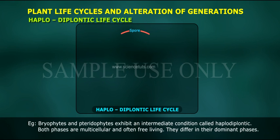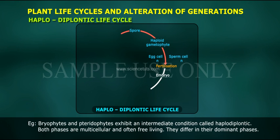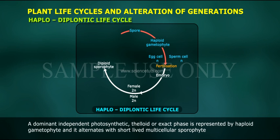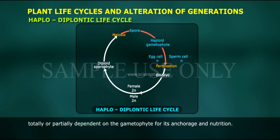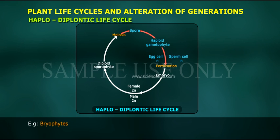3. Haplodiplontic Life Cycle: Bryophytes and pteridophytes exhibit an intermediate condition called the haplodiplontic life cycle. Both phases are multicellular and often free-living, but they differ in their dominant phases. In bryophytes, a dominant, independent, photosynthetic, thalloid or erect phase is represented by the haploid gametophyte, and it alternates with a short-lived multicellular sporophyte totally or partially dependent on the gametophyte for its anchorage and nutrition.